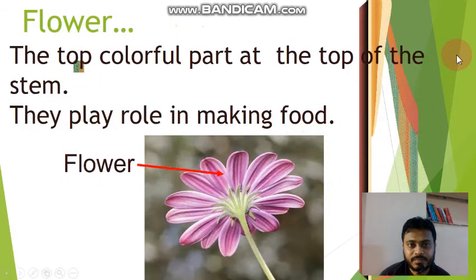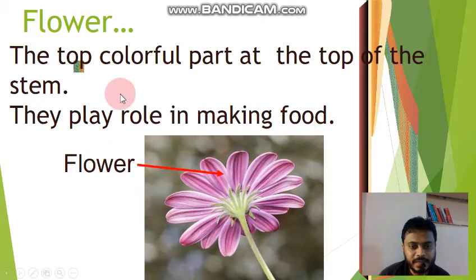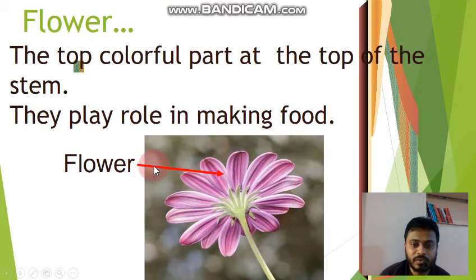Flower. The top colorful part at the top of the stem, that is the flower. They play a role in making food. This is the fifth part of the plant — the colorful part of the plant.